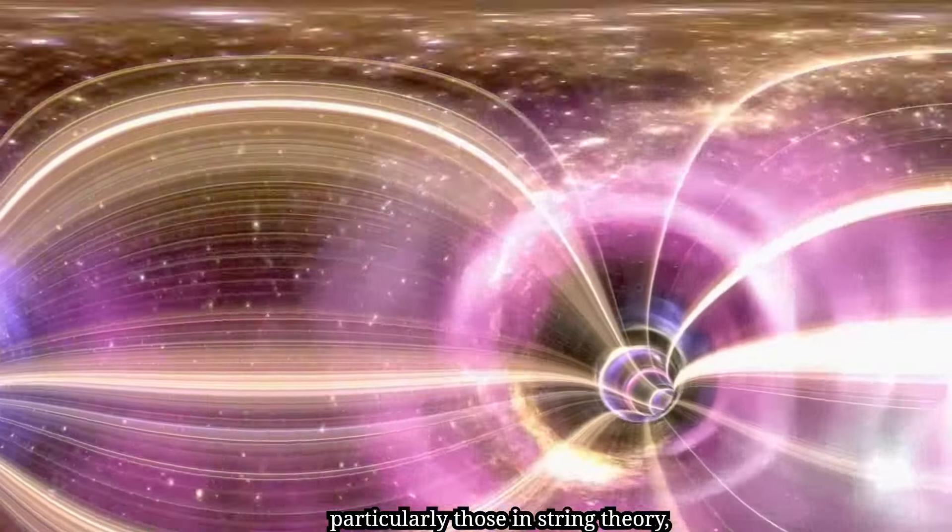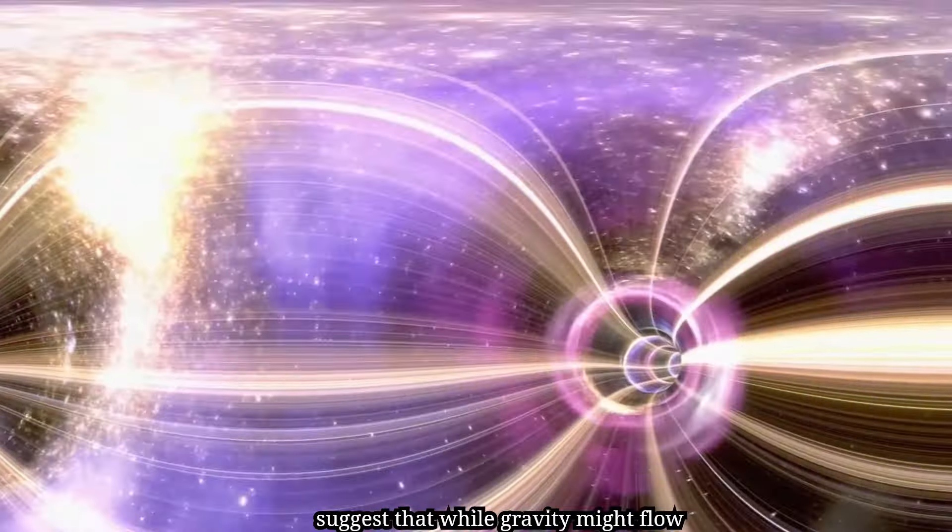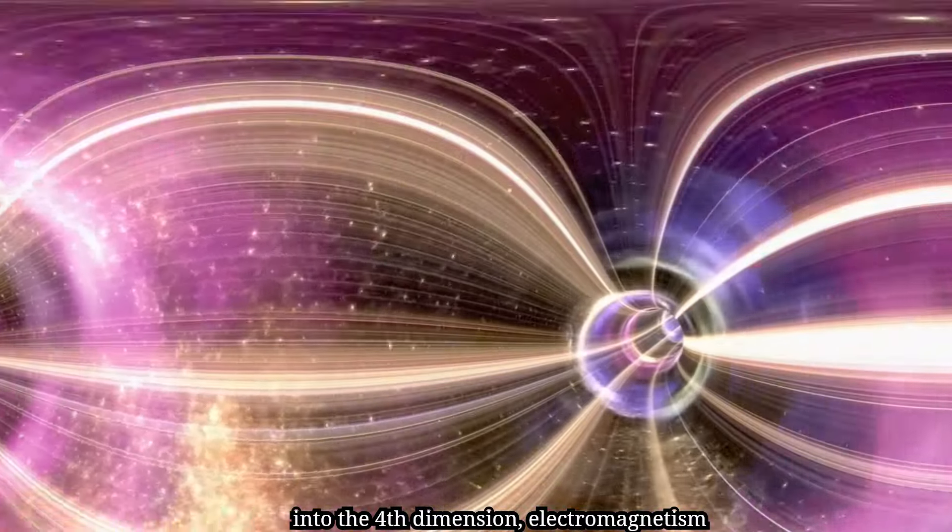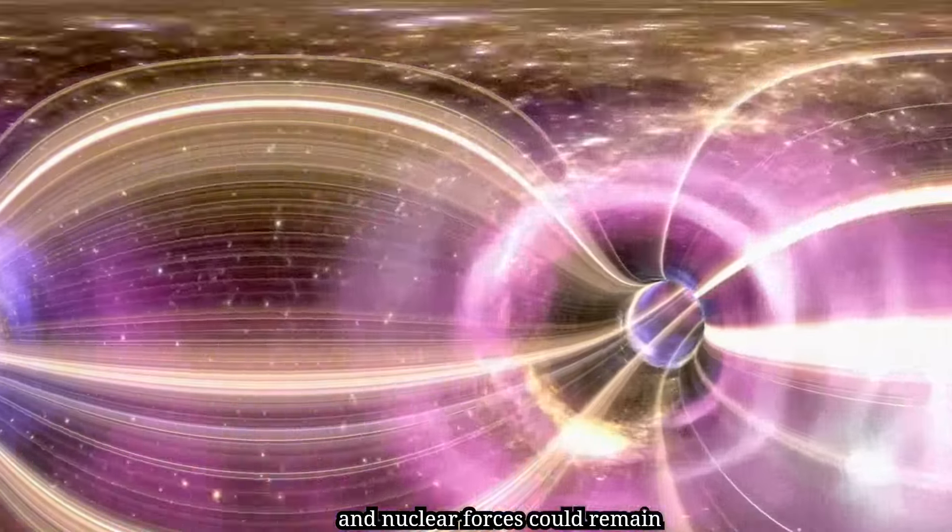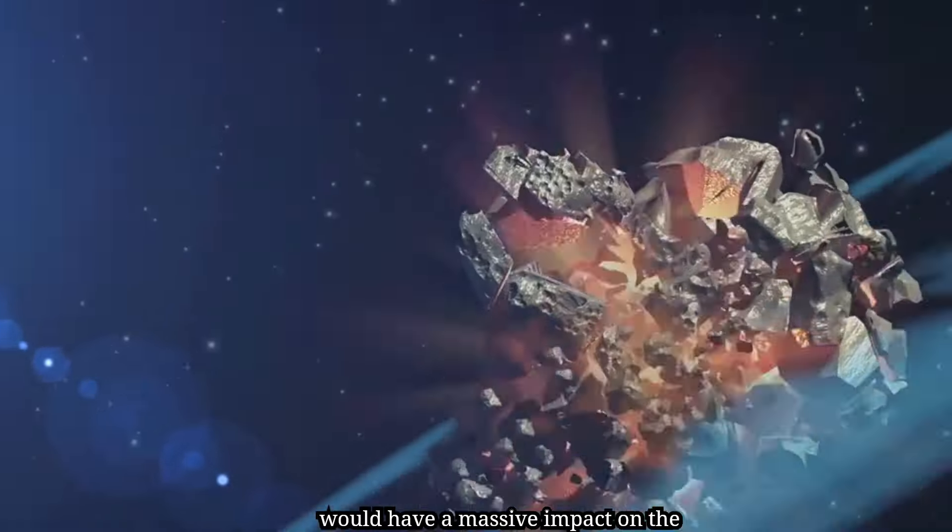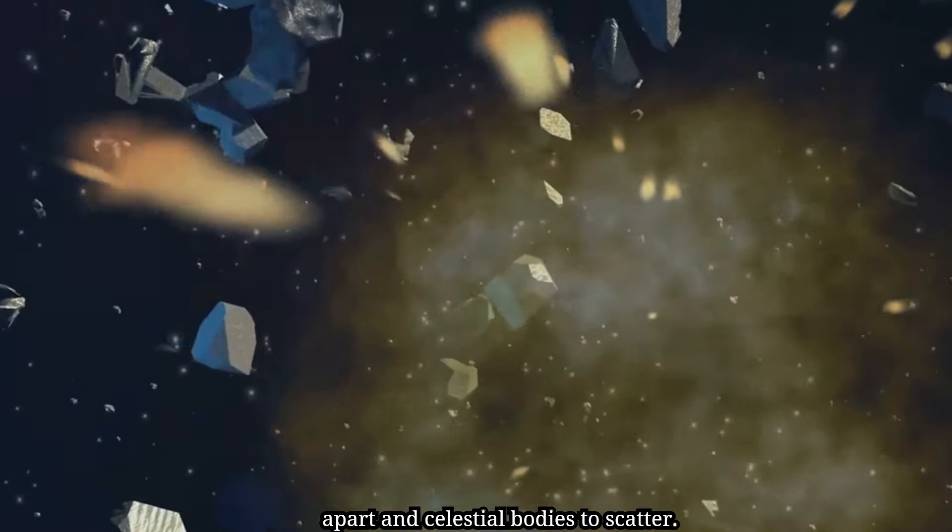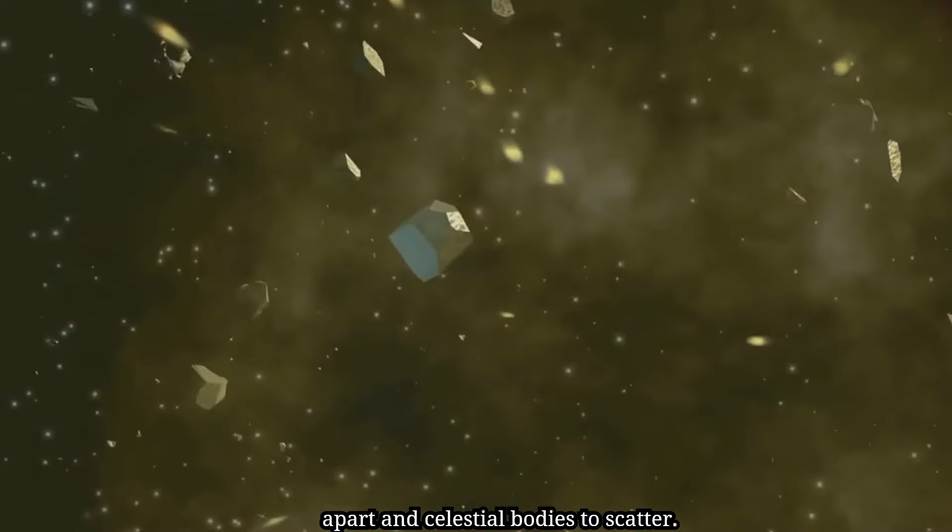Other models, particularly those in string theory, suggest that while gravity might flow into the fourth dimension, electromagnetism and nuclear forces could remain unaffected. Gravity's weakening would have a massive impact on the universe, causing asteroids to drift apart and celestial bodies to scatter.